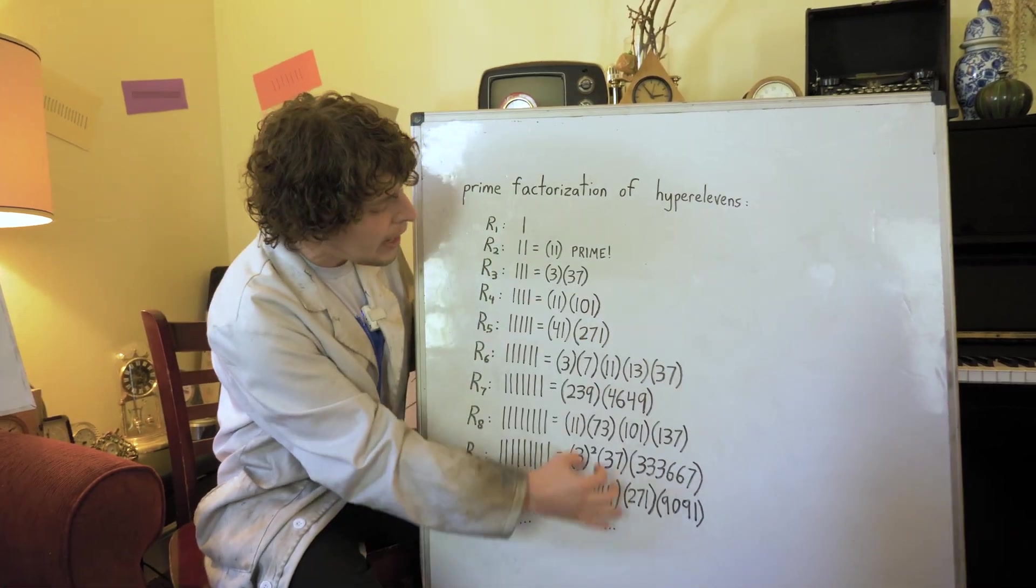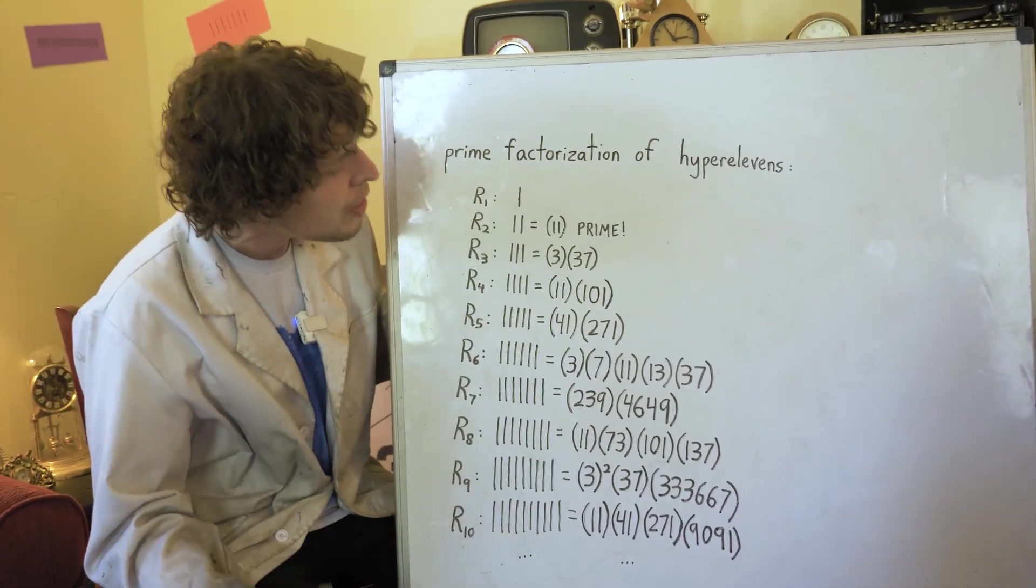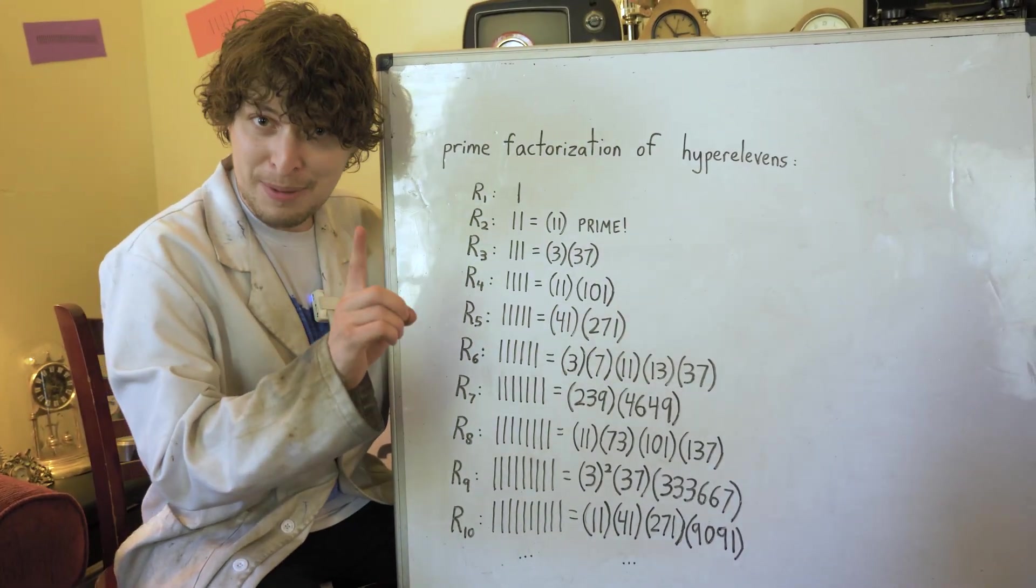Now if we look at the prime factorizations of these small hyper 11s, we can notice an interesting pattern.